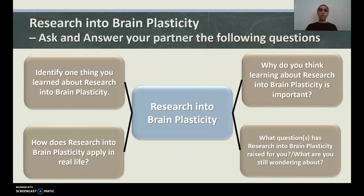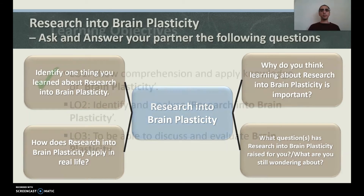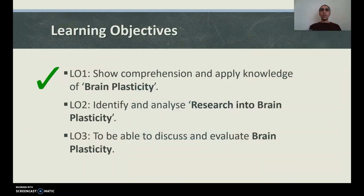Reflection questions on research into brain plasticity: Identify one thing you learned. Why do you think this research is important? How does it apply in real life? What questions has the research raised for you — write them down, put them in the comments. Learning Objective 2 — identify and analyze research into brain plasticity — we're happy to tick this off.